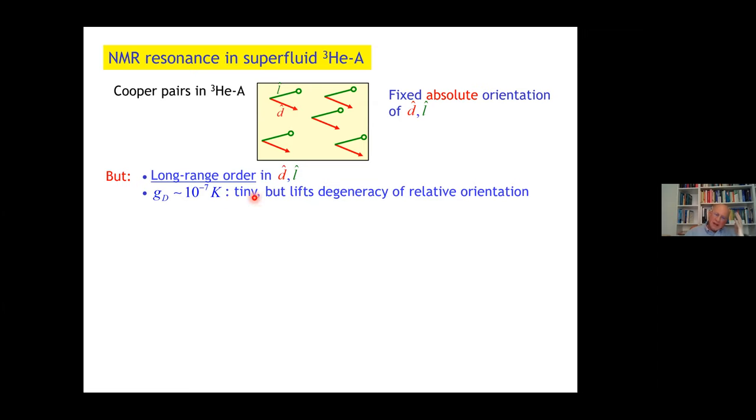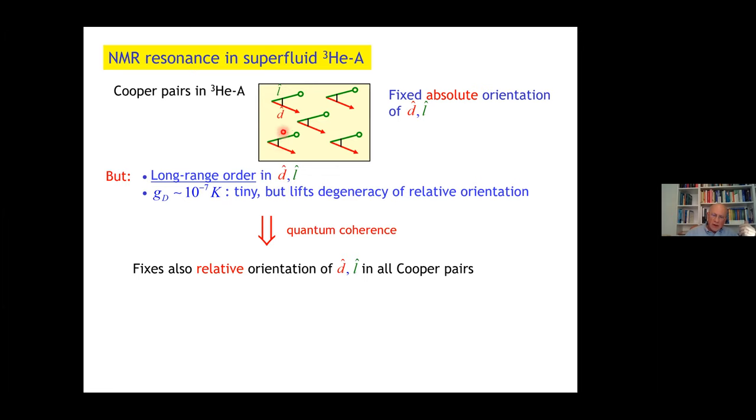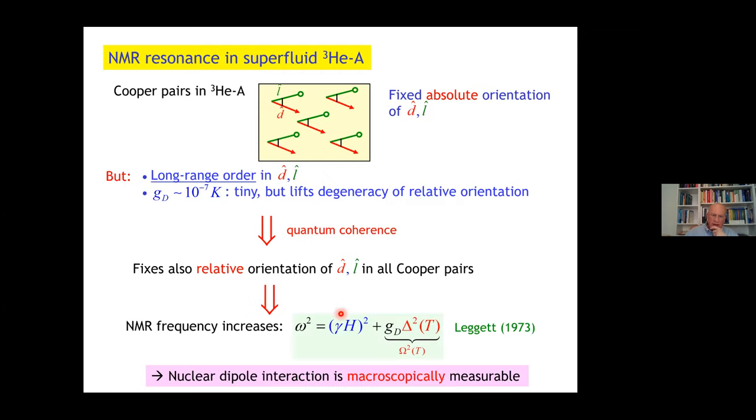The dipolar interaction between nuclear spins is so tiny, 10 to the minus 7, it should not be important. But this argument is wrong, because D and L are already long-range ordered through the pairing interaction. Any interaction, as tiny as it may be, can come along and lift the degeneracy and actually fix the value of that angle. Because of the quantum coherence, this is the same in all Cooper pairs.